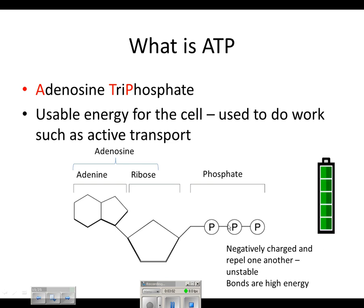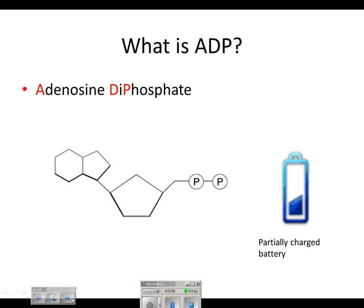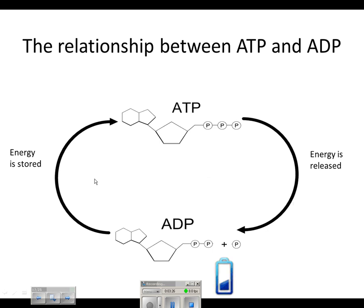Think of ATP as a fully charged battery. ADP, adenosine diphosphate, looks very similar but only has two phosphate molecules — it lost one, and that energy was used. ADP is a partially charged battery and needs to pick up another phosphate to be fully charged. ATP and ADP are constantly recycled: when ATP loses a phosphate, energy is released and it becomes partially charged ADP. The ADP then returns to a reaction where energy is stored again, making the battery fully charged.